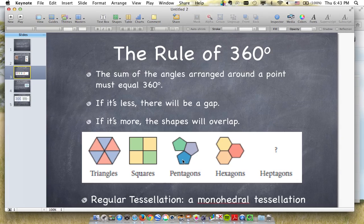If we look at the pentagon, however, we notice that the pentagon doesn't work because when you have the three angles of the pentagon meet, that doesn't equal 360, it equals 324, and we're left with this tiny little angle here. If I try and put a fourth pentagon, there's going to be an overlap.